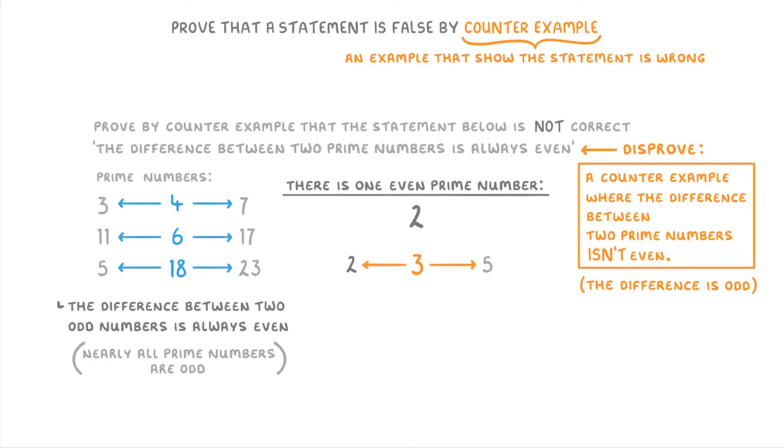So this example of 2 and 5 disproves the statement in the question, because it shows that the difference between two prime numbers isn't always even. You could also have used any other counterexample that worked though, like 2 and 3, which has the odd difference of 1...